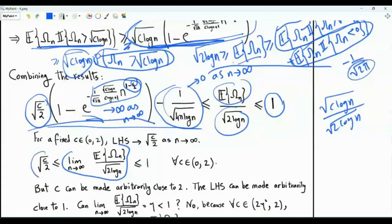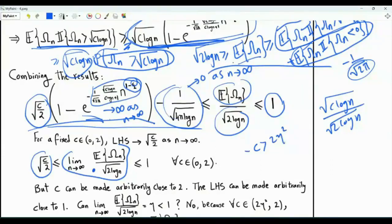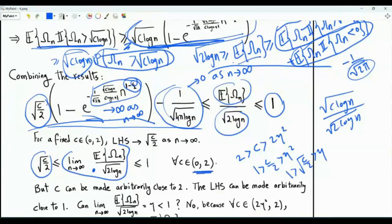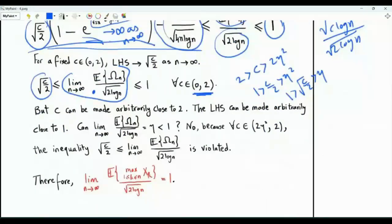Since c can be made arbitrarily close to 2, the limit cannot equal any eta strictly less than 1: we could choose c > 2*eta² (and less than 2), giving sqrt(c/2) > eta, contradicting the assumption. Therefore the limit of E[omega_n]/sqrt(2 log n) is exactly equal to 1.